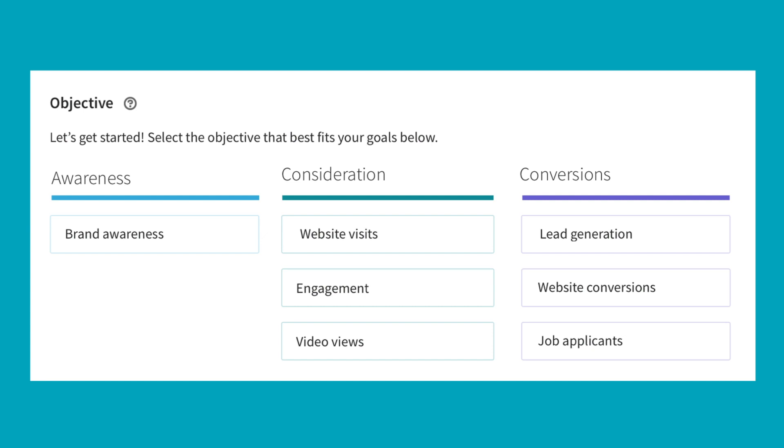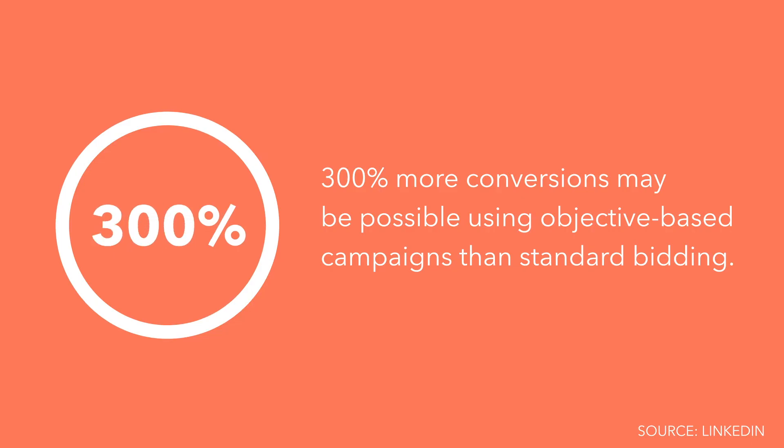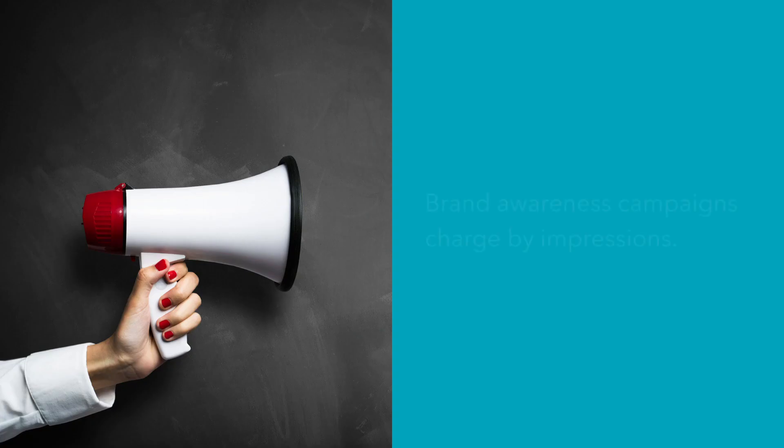You can choose from three objective-based campaigns for your LinkedIn ad: awareness, consideration, and conversion. One user reported that objective-based campaigns generated 300% more conversions than standard bidding. These campaigns only bill you based on the desired objective — for example, if you're running a conversion campaign, you'll only be charged for clicks, not impressions. Awareness campaigns charge by impressions — cost per thousand, or CPM — and are ideal for high-level brand building and prospecting.